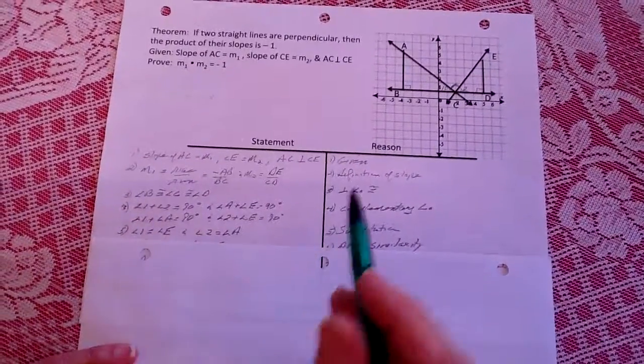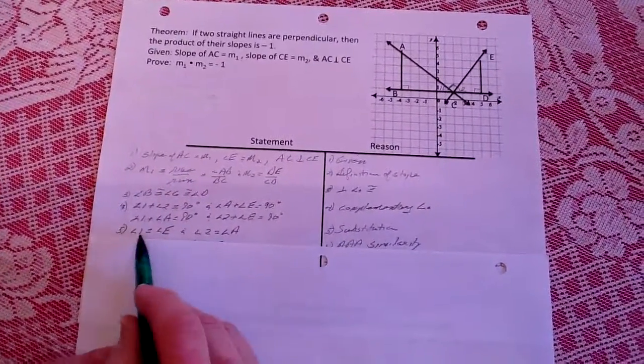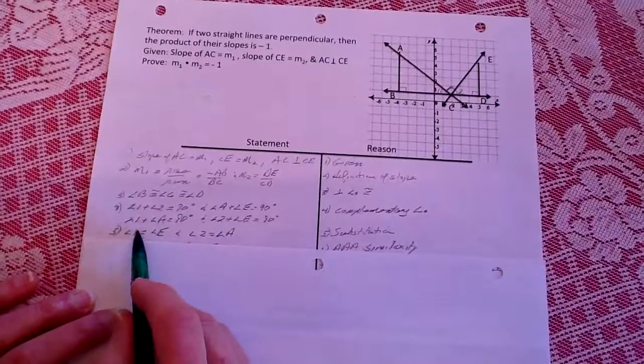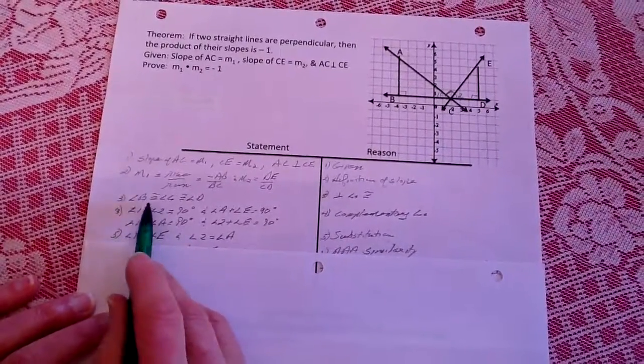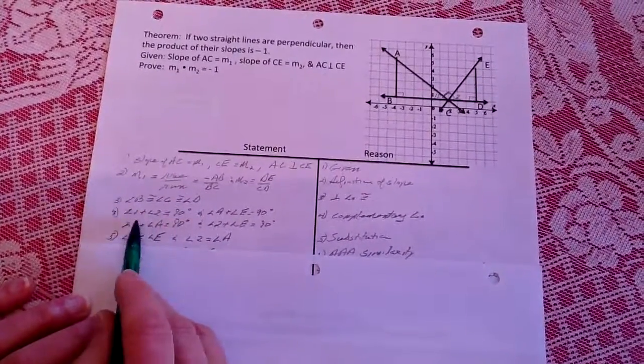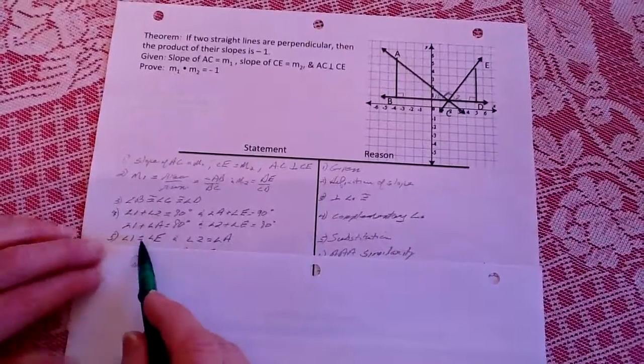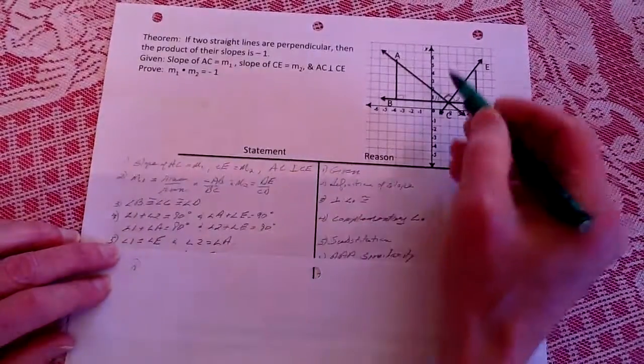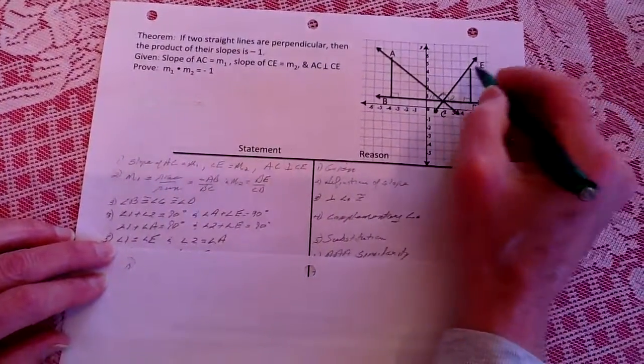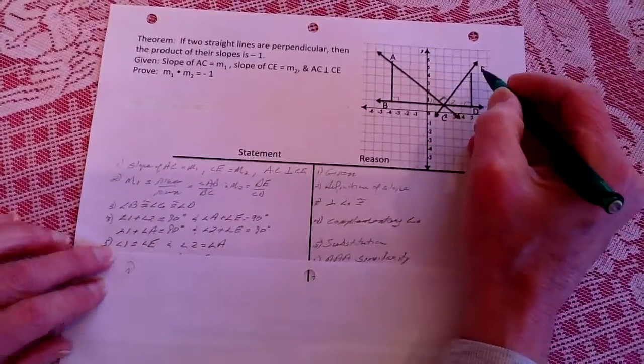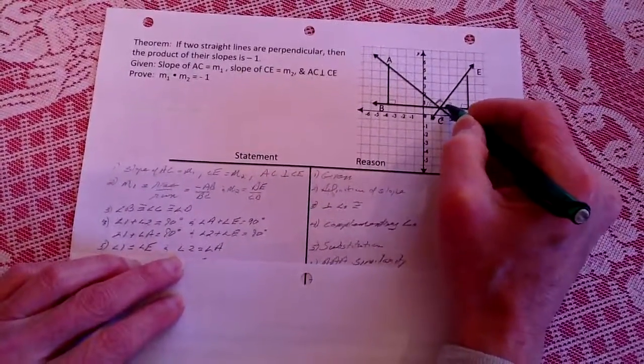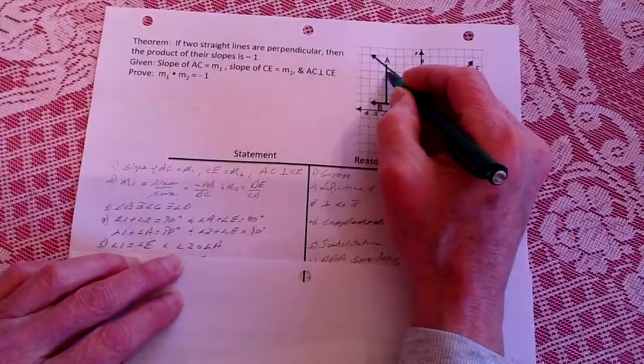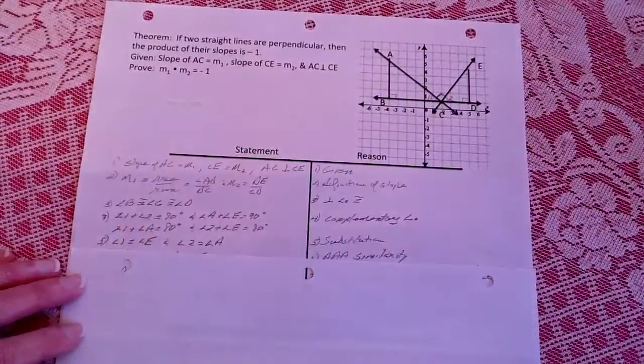We likewise know that angle 1 and 2, if you add angle 1 to A and angle 2 to E, they both are going to end up being 90 degrees because these two are 90 degrees, and that's because they're all complementary angles. From that, through substitution, we can find that angle 1 is congruent to angle E, and angle 2 is congruent to angle A, and that's done by substitution.